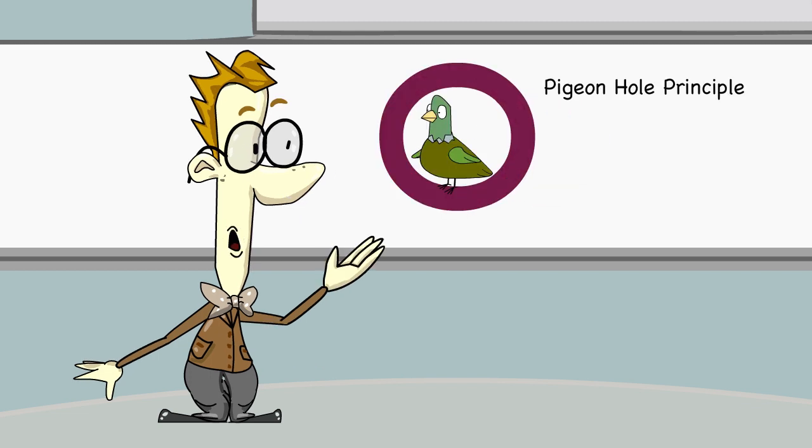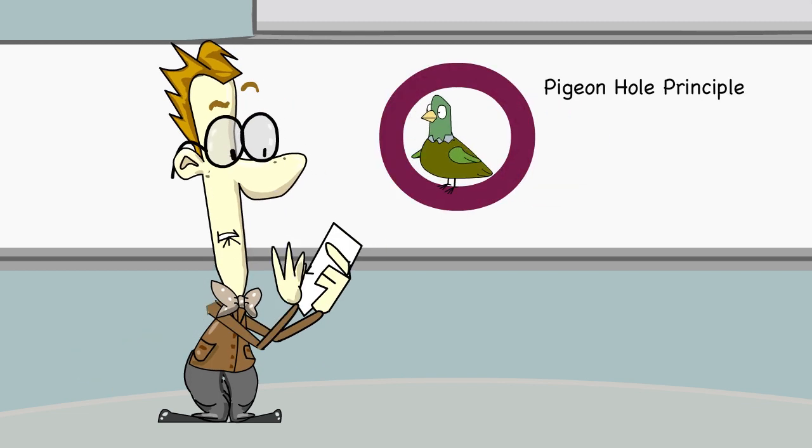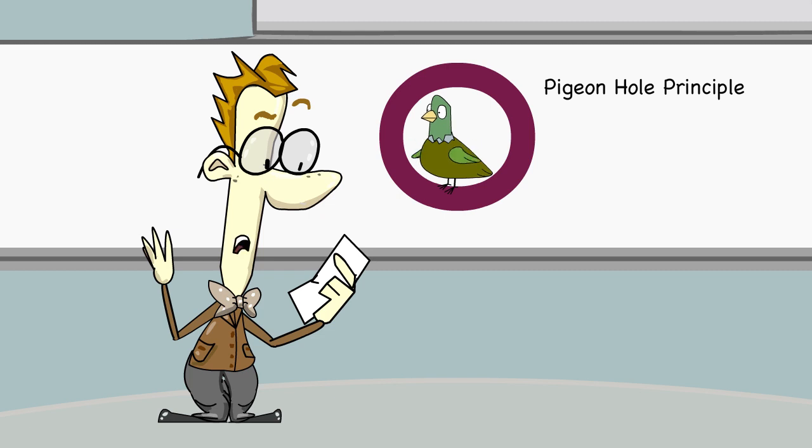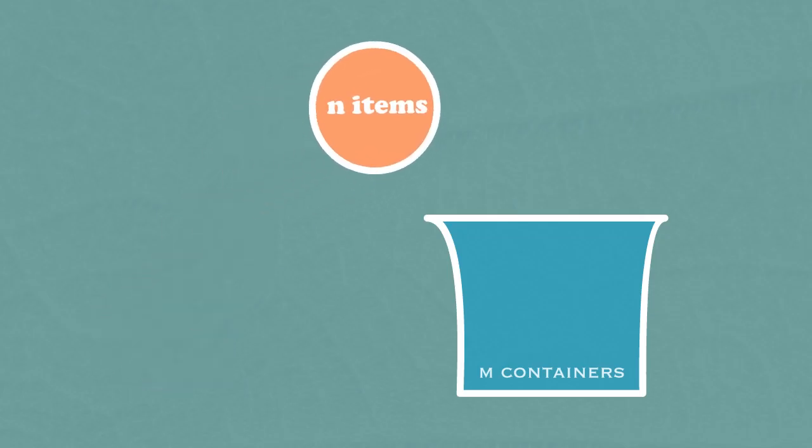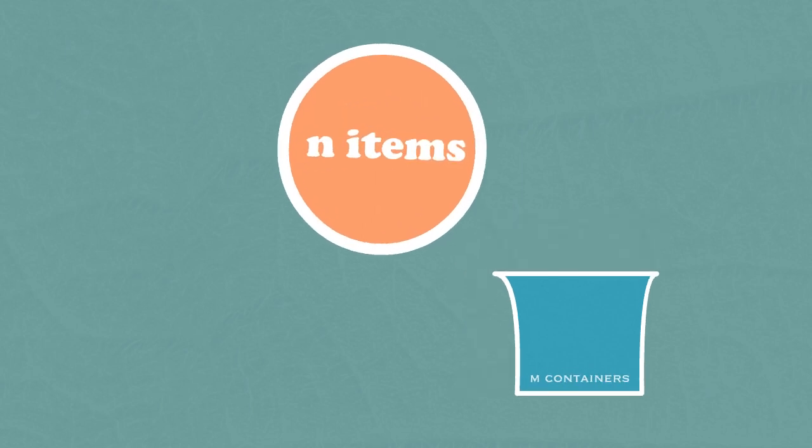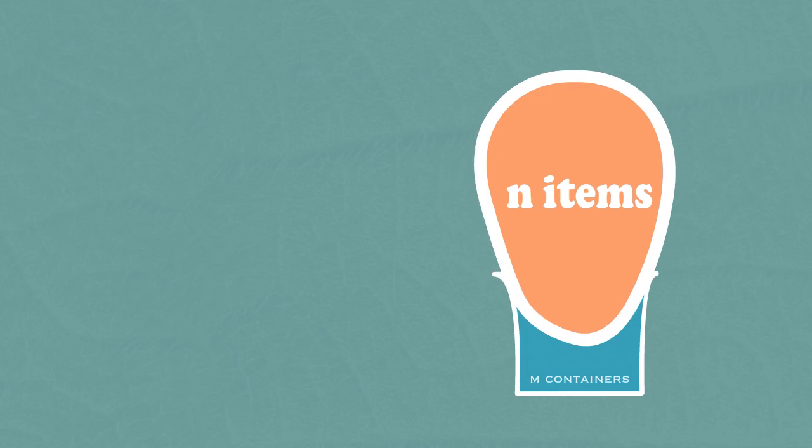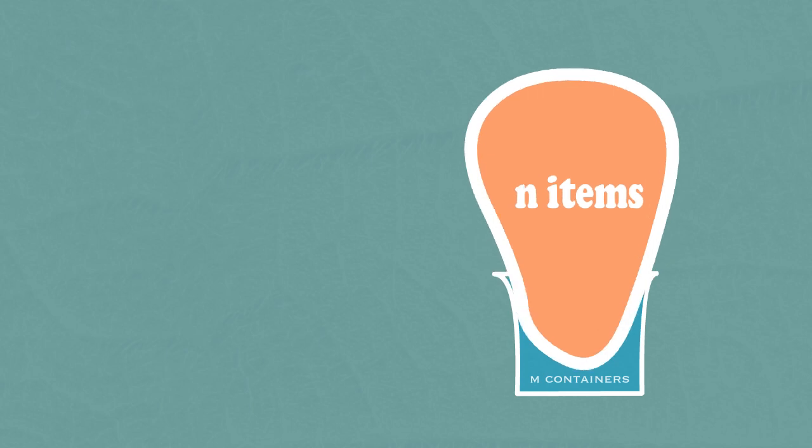Let's start with pigeonhole principle formed by Peter Dirichlet. If n items are put into m containers with n greater than m, then at least one container must contain more than one item.